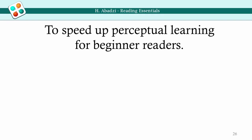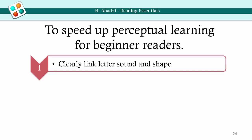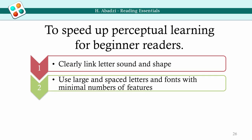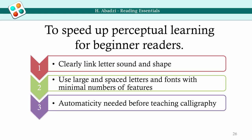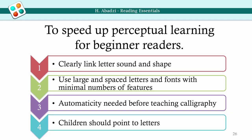In conclusion, to speed up perceptual learning for beginner readers: clearly link letter sound and shape; teachers should be advised to write big letters on the board; in the textbook, letters should be large and spaced; fonts with just the indispensable features could be used; calligraphy, often used in Africa, could wait until after automaticity is attained; and children could be asked to point to letters — in the book as well as towards the blackboard.